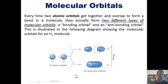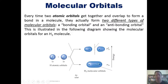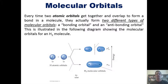When I have two individual hydrogen atoms, they each have their atomic 1s orbitals, each possessing one electron. As they come together to form a molecule of H₂, two new molecular orbitals form: one that looks like a pill shape, called a bonding orbital, and another called an anti-bonding orbital.